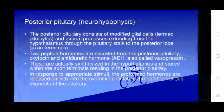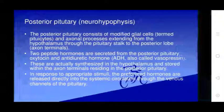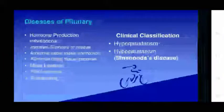The posterior pituitary (neurohypophysis) consists of modified glial cells and axon processes extending from the hypothalamus through the pituitary stalk to the posterior lobe. Two peptide hormones are secreted: oxytocin and antidiuretic hormone (ADH), also called vasopressin. These are actually synthesized by the hypothalamus and stored in the axon terminals of the posterior pituitary. In response to stimuli, the hormones are released directly into the systemic circulation.